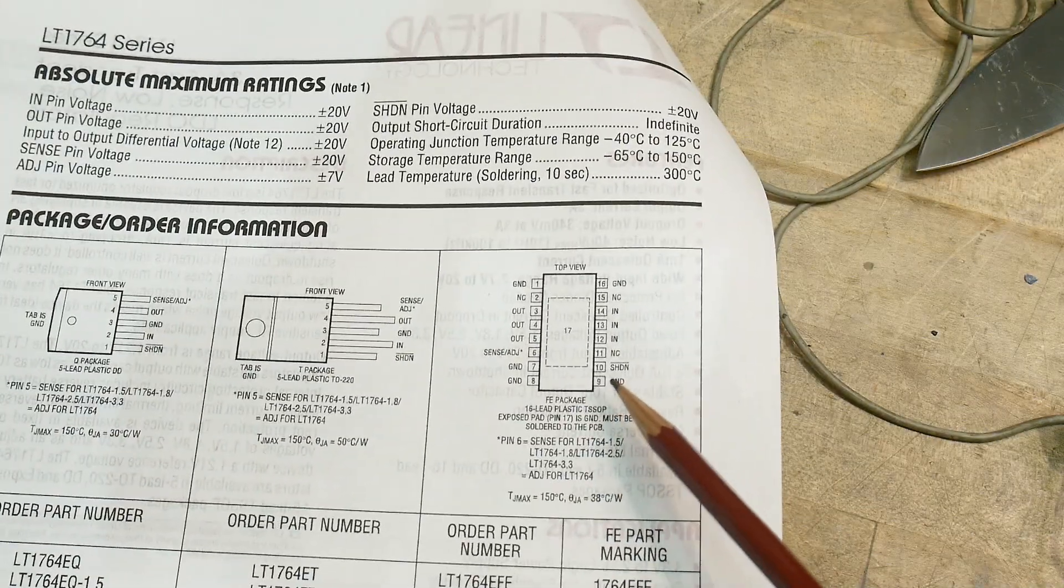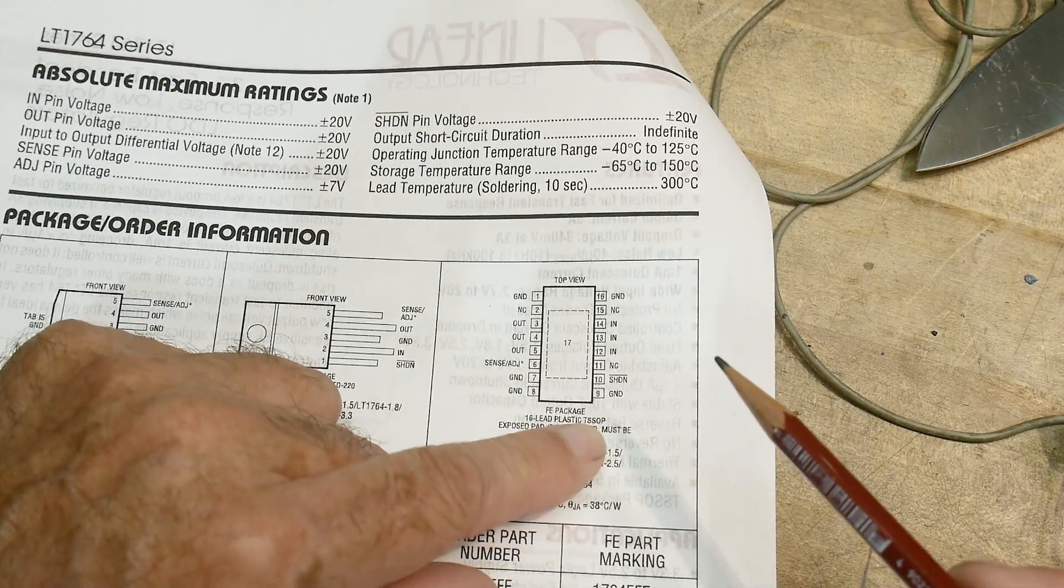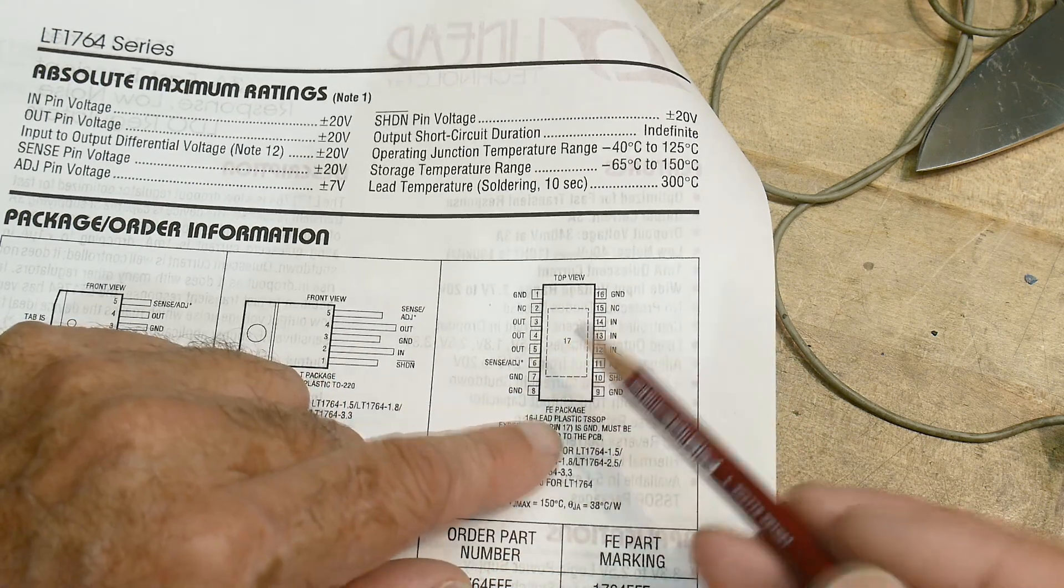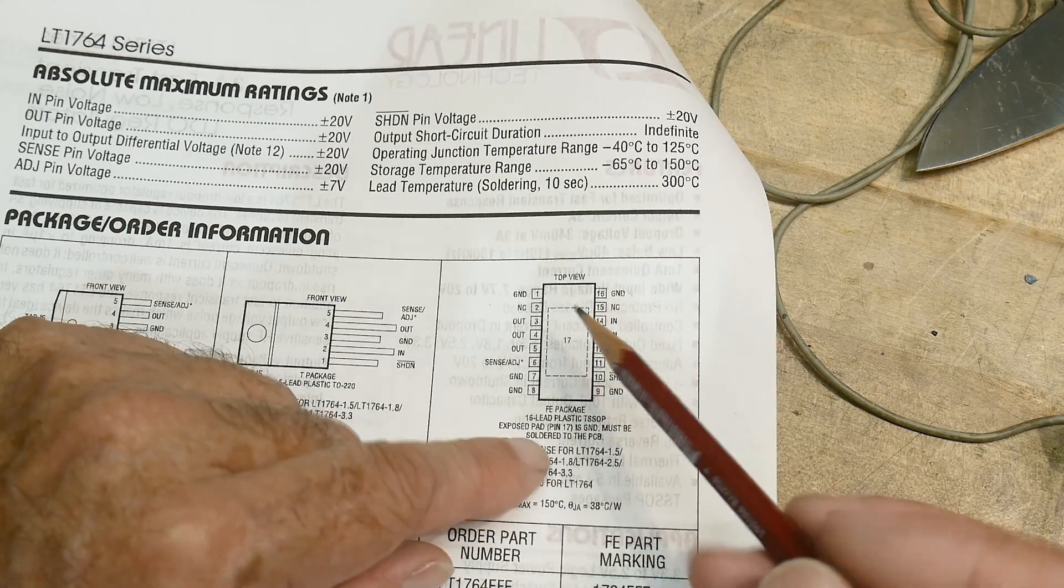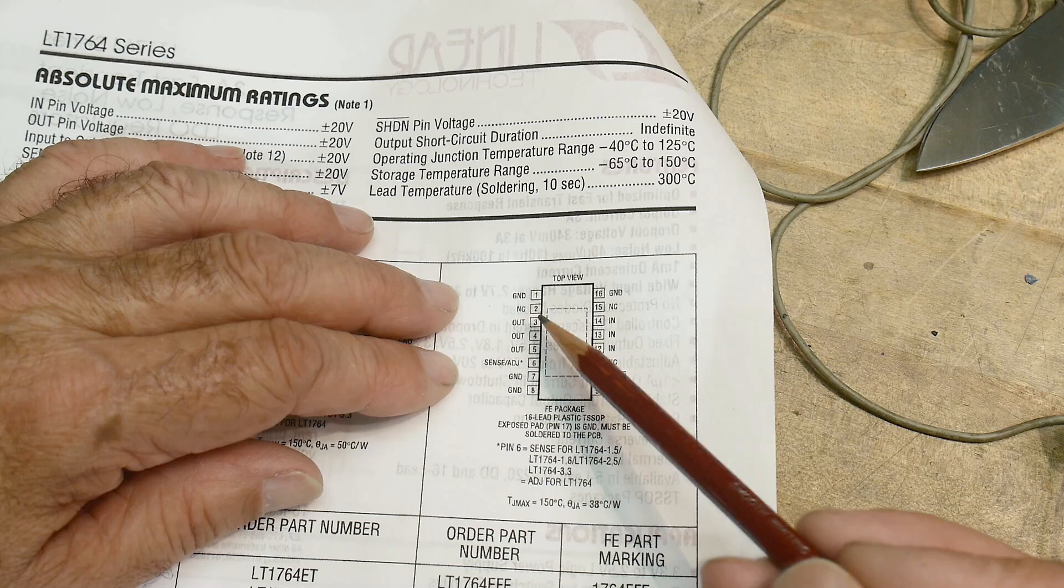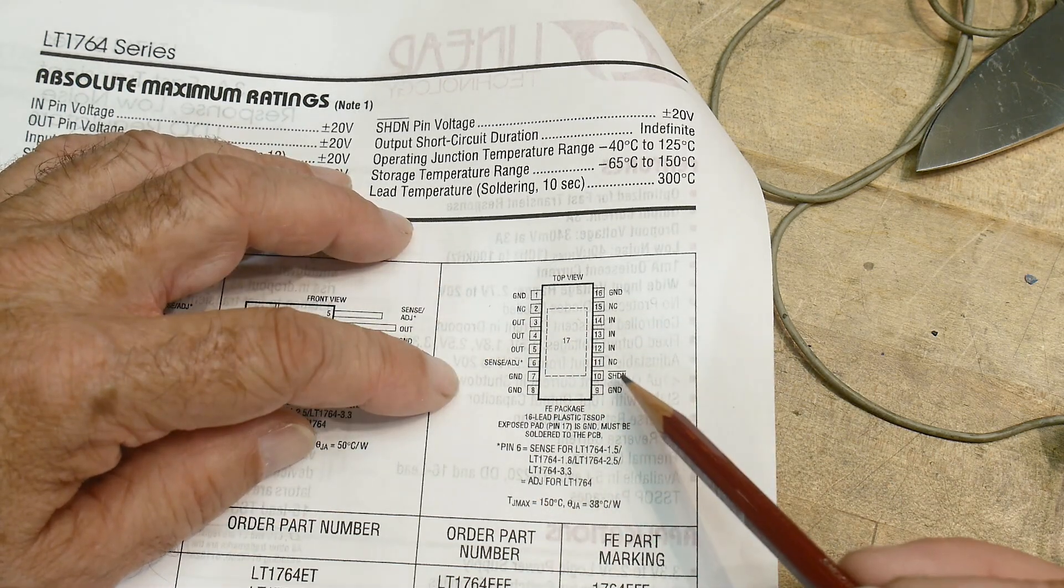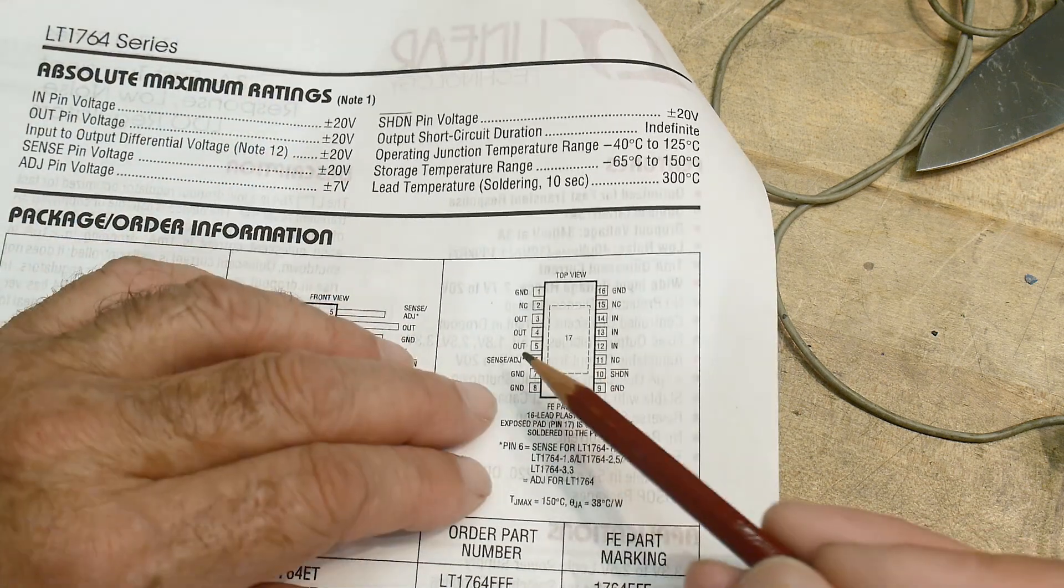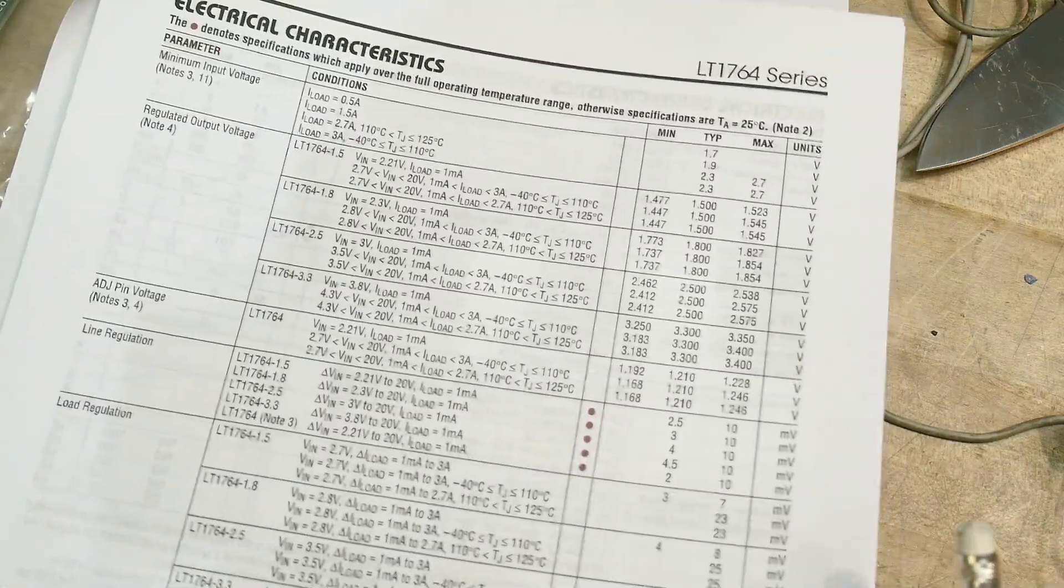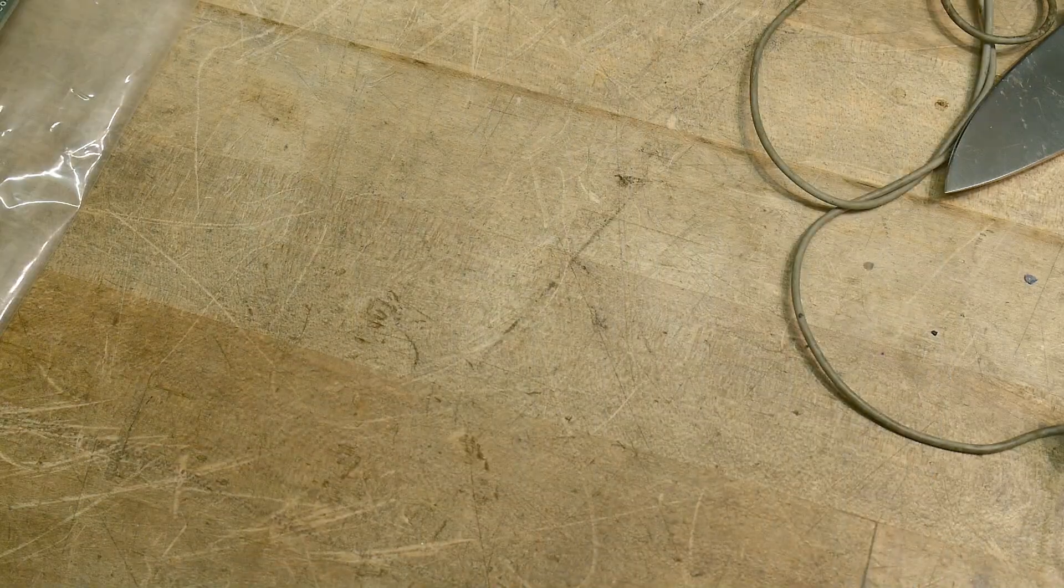But the ones that I have are these little guys. These are a TSSOP-16. Yeah, they're little fine-pitch leads. So you have ground on all four corners, you have three lines of output, three lines of input. There's a shutdown pin that goes into that one microamp or whatever it is, and then there's the sense adjust line for the adjustable version. Really cool stuff.